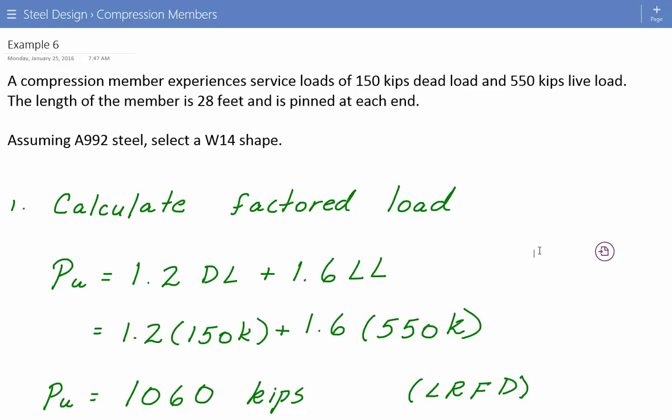The first thing we need to do is calculate the factored load. These factored load combinations are based on ASCE7 for both LRFD and ASD. For LRFD, the governing load combination will be 1.2 times dead load plus 1.6 times live load. So we plug in 1.2 times 150 kips plus 1.6 times 550 kips. The factored load for LRFD is 1,060 kips.